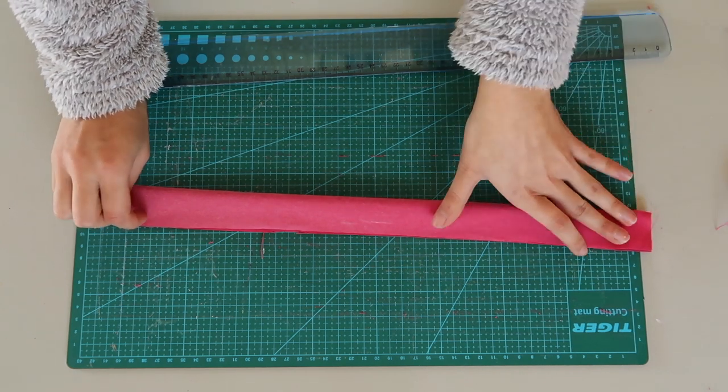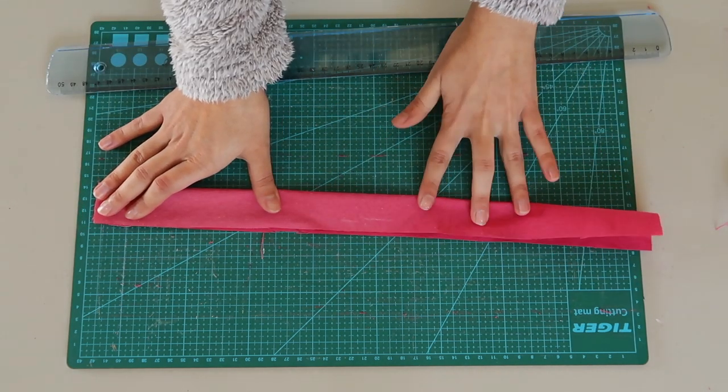Fold the scrunchie piece in half, lengthwise, with the right sides facing each other and sew the side.